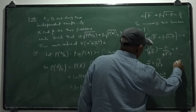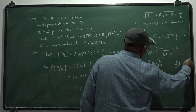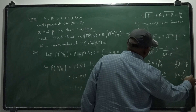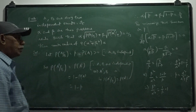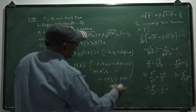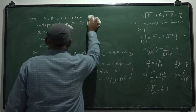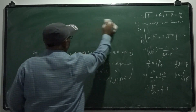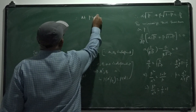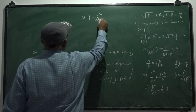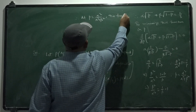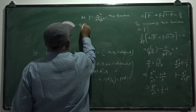Therefore, at p equal to alpha squared by alpha squared plus beta squared, the function takes its minimum value.